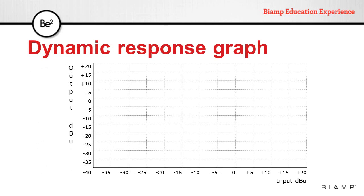We can better explain how dynamic processors work by using a dynamic response graph. This graph represents the output level versus the input level. Input level is represented in the horizontal axis while the output level is represented in the vertical axis.